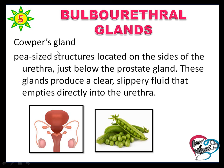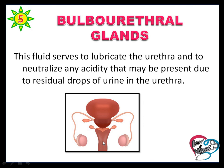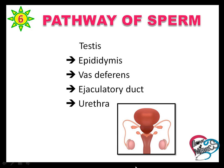The bulbourethral gland, also called Cowper's gland, is a pea-sized structure located at the side of the urethra and just below the prostate gland. This gland produces a clear slippery fluid that empties directly into the urethra. Its secretions lubricate the urethra and neutralize any acidity that may be present due to residual drops of urine in the urethra.